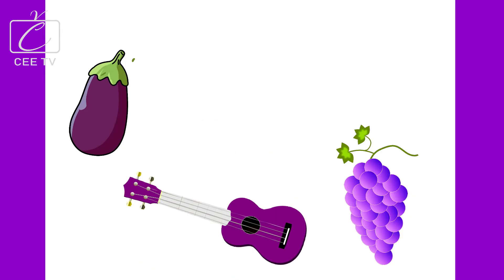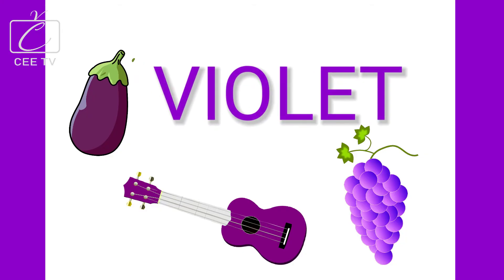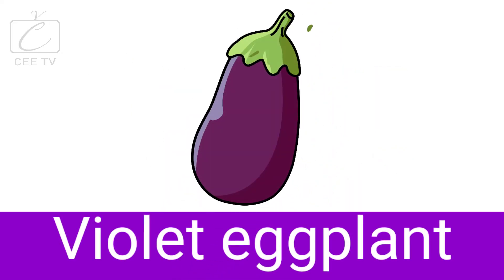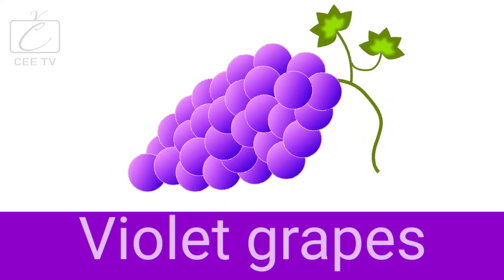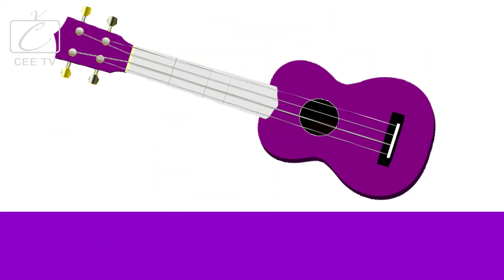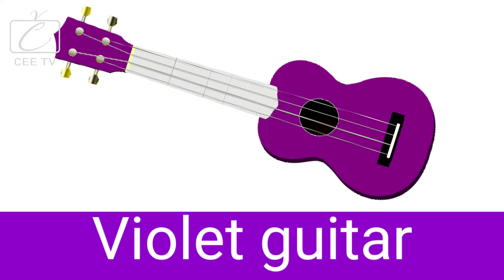Let's identify these violet objects. Violet eggplant. Violet grapes. Violet guitar.